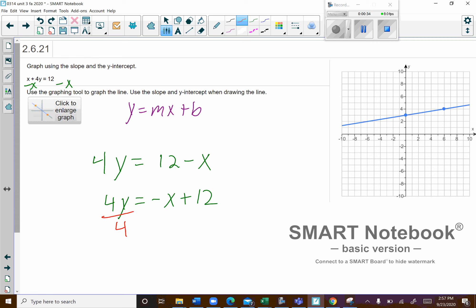Then we'll divide everything by 4 here, and that's going to leave us with y equals negative 1 4th x plus 12 divided by 4 is 3.